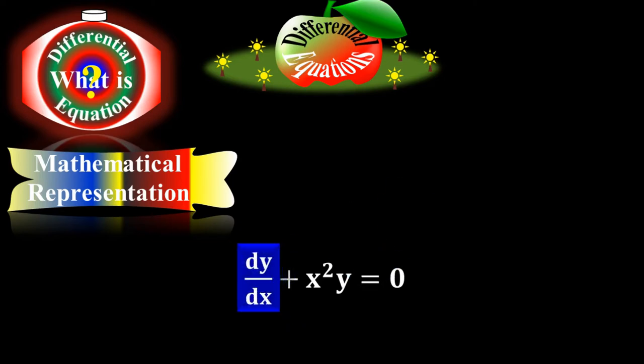I just mentioned that y is a dependent variable and x is independent variable in this equation. But you may have equations where x is a dependent and y is independent.